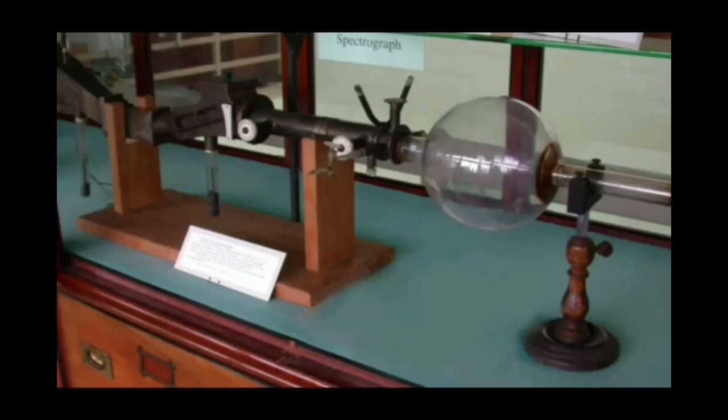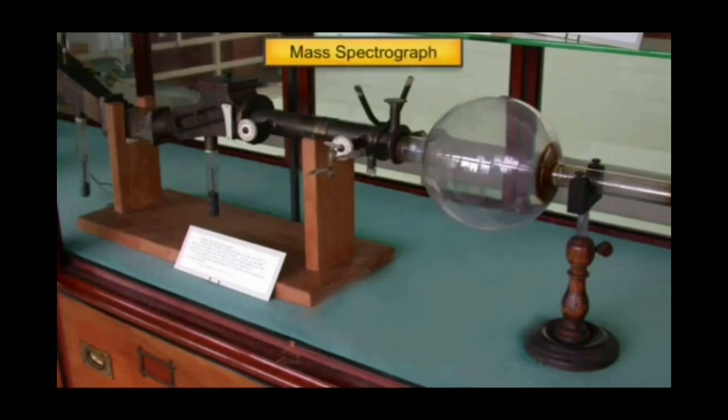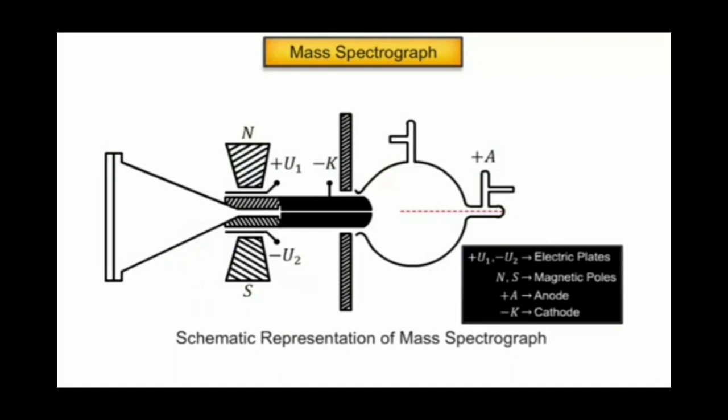In mass spectrograph, in the path of rectilinear motion of charged particles like electron, we apply electric field and magnetic field. Under the action of electric field and magnetic field, the path of the charged particles gets curved. They follow a curved path.